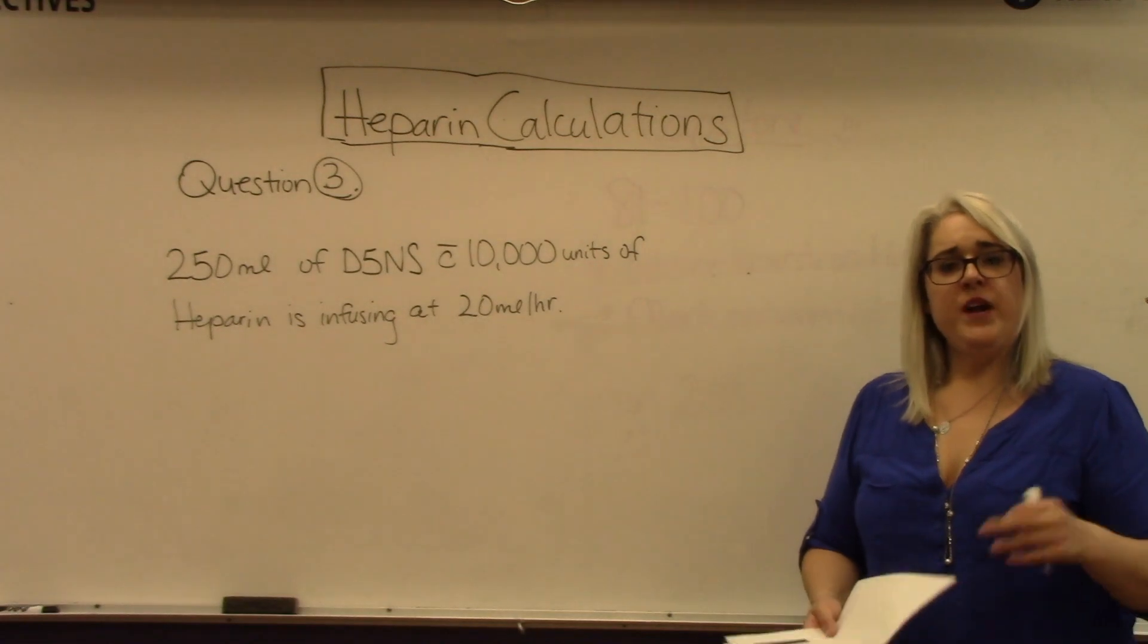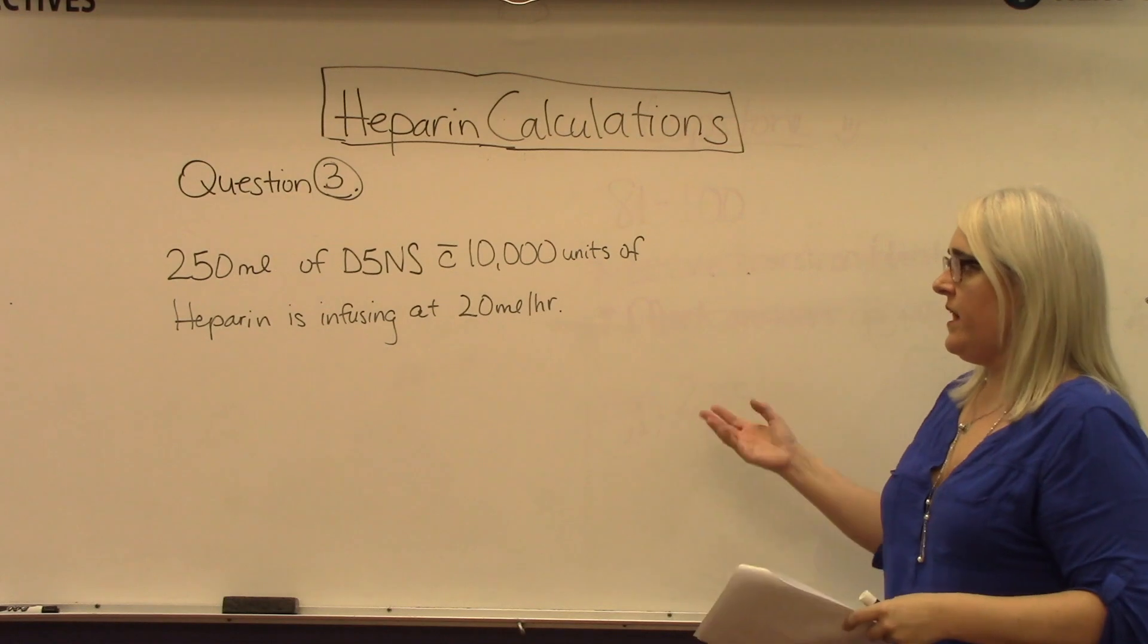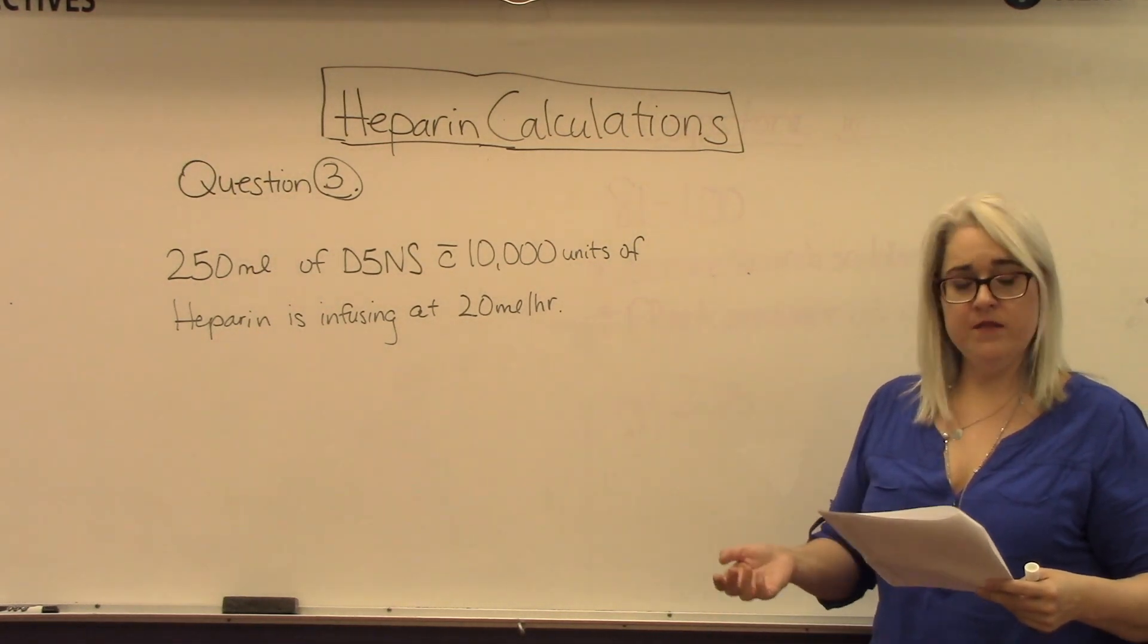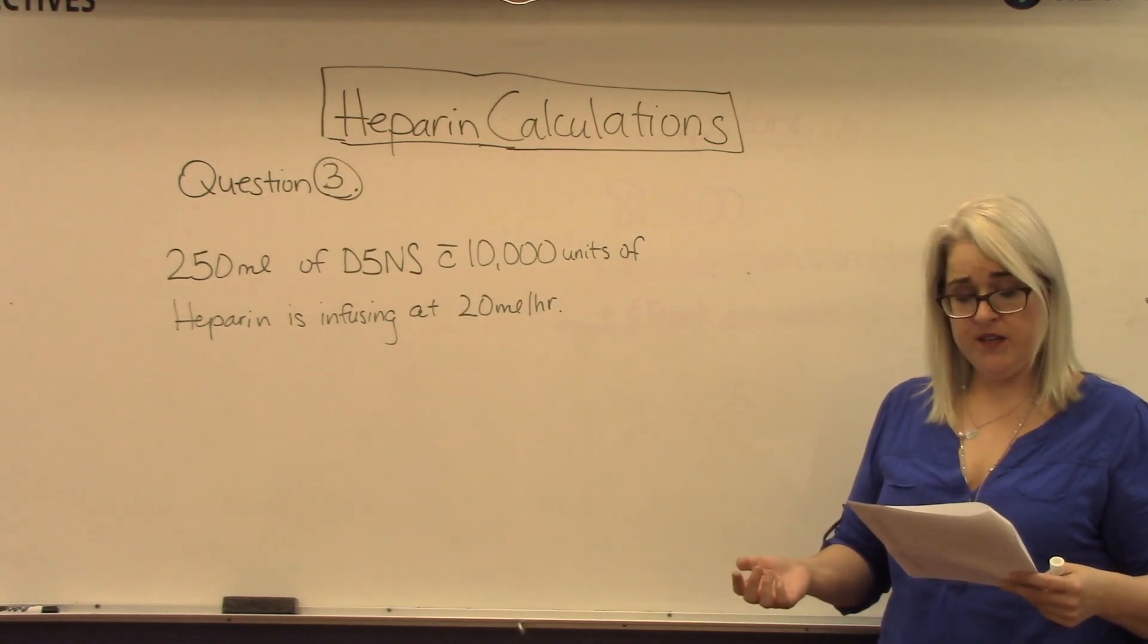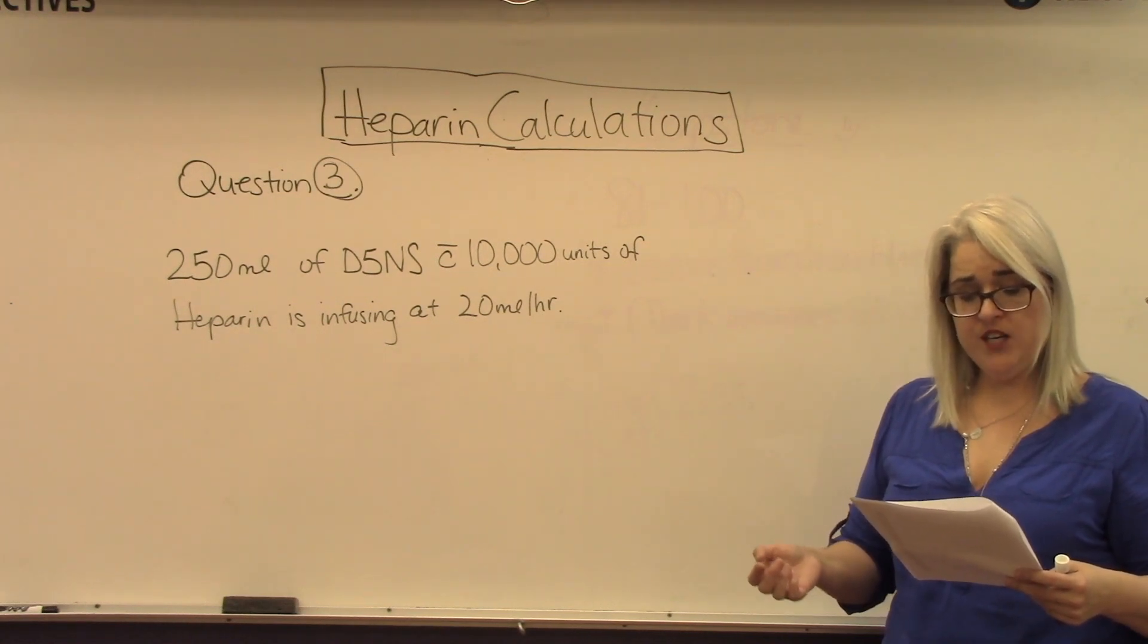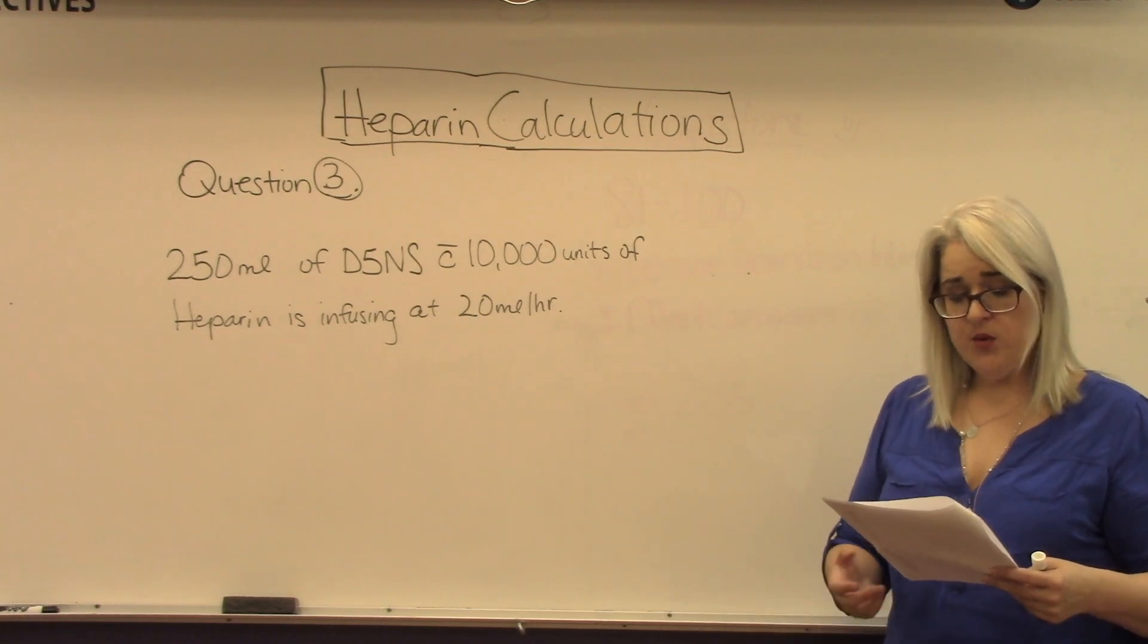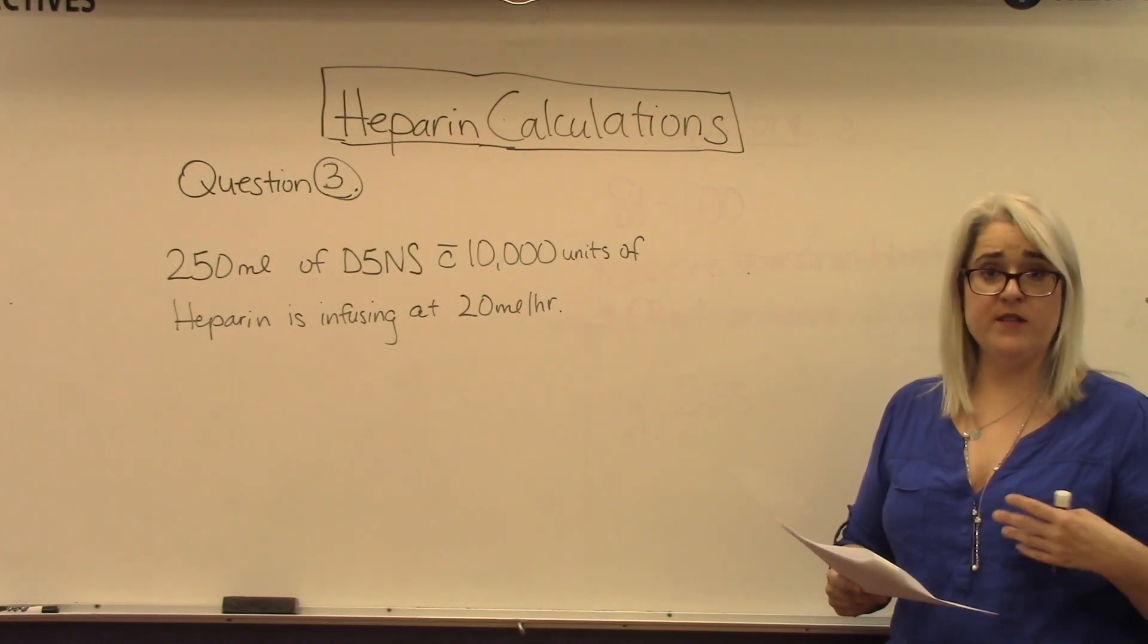This brings us to practice question number 3, which is different from the first two. You have 250 milliliters of D5 normal saline with 10,000 units of heparin infusing at 20 milliliters an hour. The IV set delivers 20 drops per milliliter. The question is, how many units of heparin is the patient receiving each hour? This question gives us some extra information that we don't really need to answer the question.